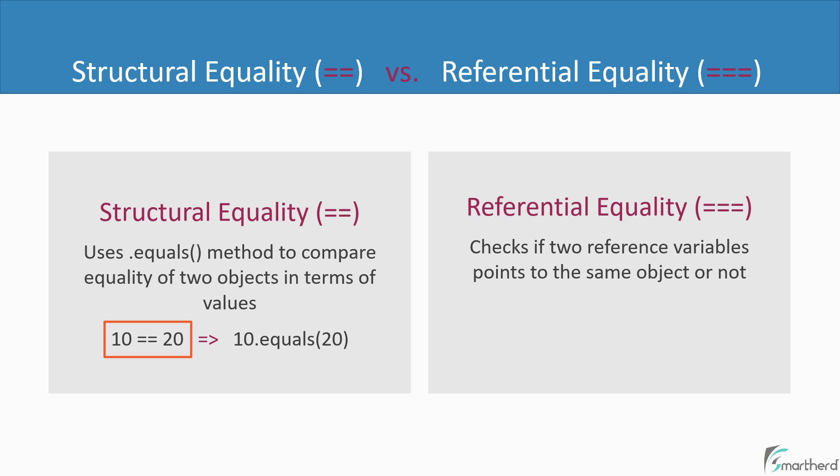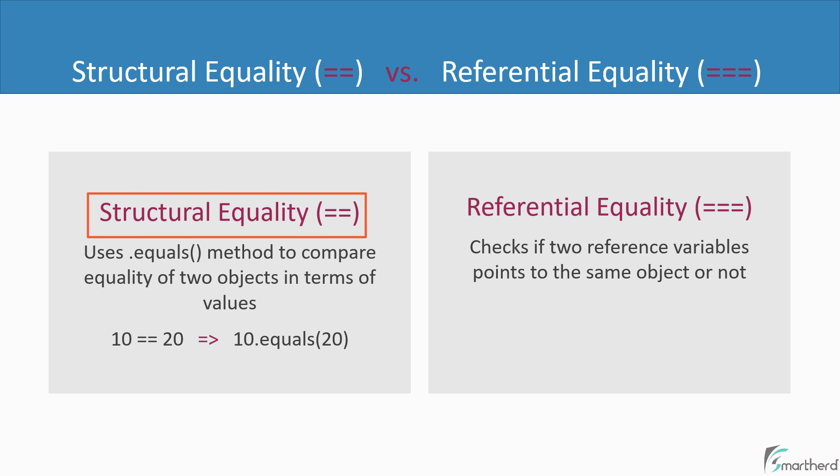Please note that this operator is totally different when compared to the equal-to operator in Java. In Java, the == operator is used to compare two object instances. But in Kotlin, it is used to compare just the values and nothing else. This is what structural equality means in Kotlin.